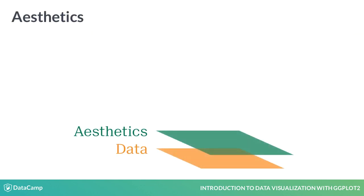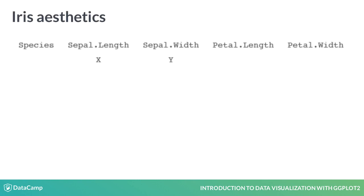The next layer we'll add is the aesthetics element, which tells us which scales we should map our data onto. This is where the second main component of the grammar of graphics comes into play. On top of layering the grammatical elements, it's here that we establish our aesthetic mappings. In this case, we are going to make a scatter plot, so we're going to map sepal.length onto the x aesthetic and sepal.width onto the y aesthetic.